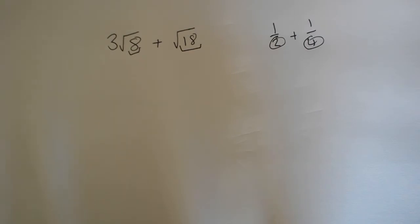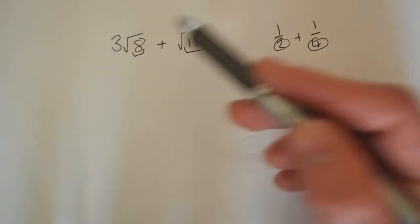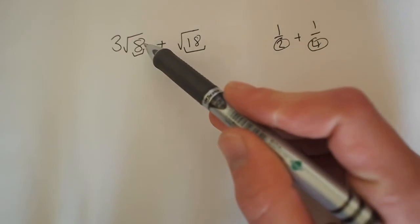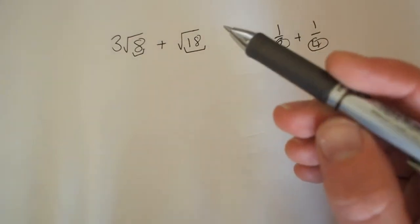So that's sort of the similar methodology of what you have to do when you're adding and subtracting surds. What you have to do is you have to simplify it down so that the two radicands here, the 8 and the 18, are the same.